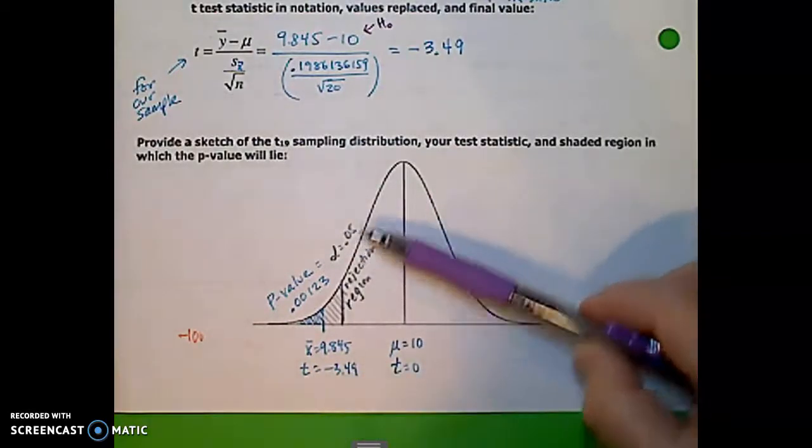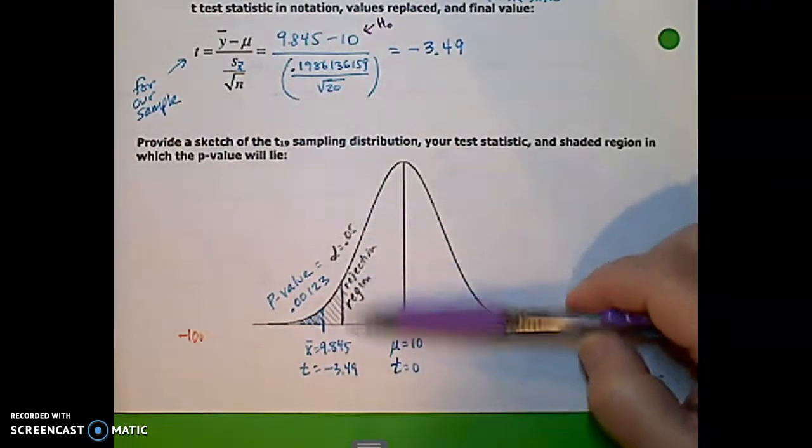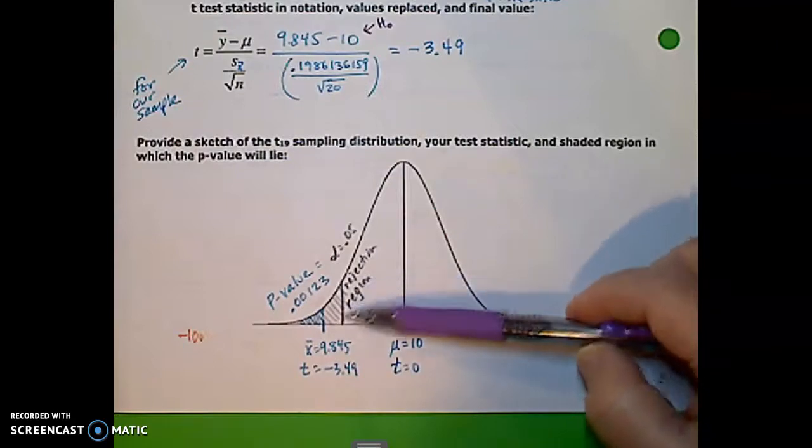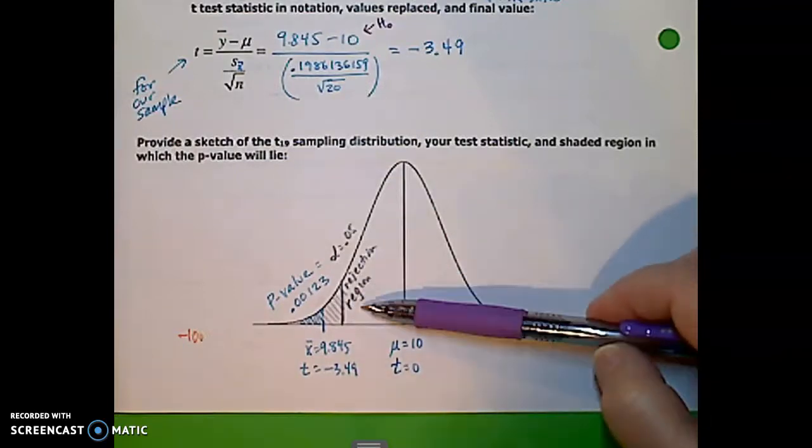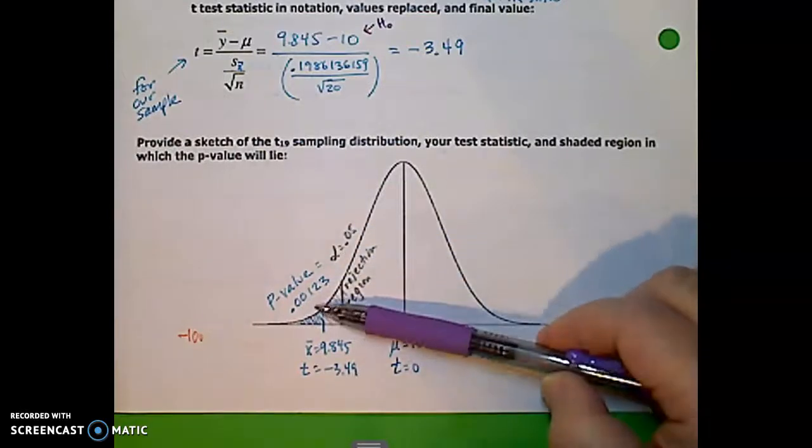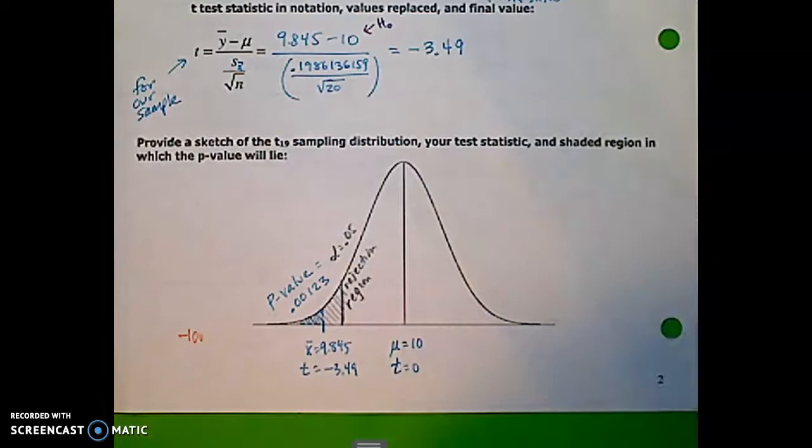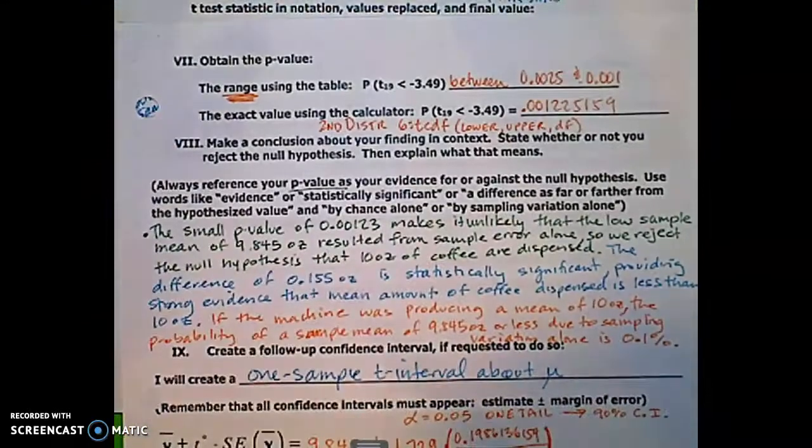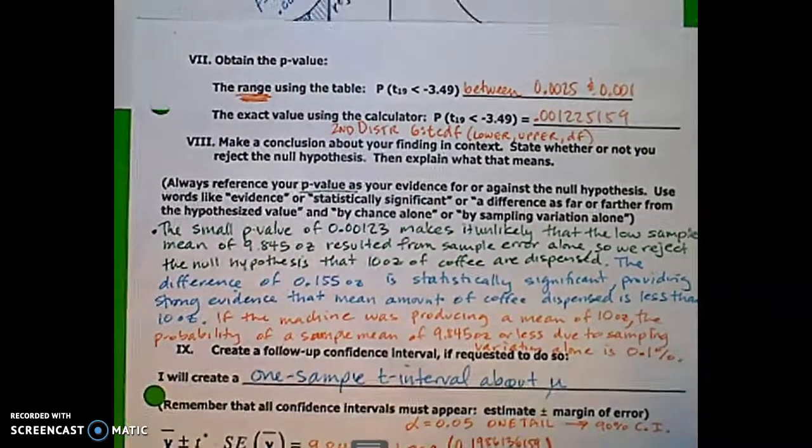We'll get that p-value in just a second. Our rejection region is 5%. You know, so you can show that on your graph or not. You don't have to. Ultimately, we're going to compare the p-value to the alpha value. Let's go ahead and calculate the p-value that's on the top of the next page. And we'll come back to the graph in a minute.